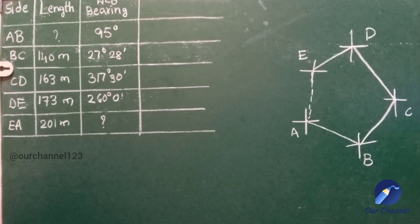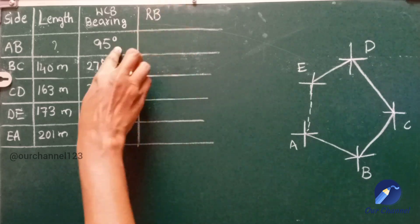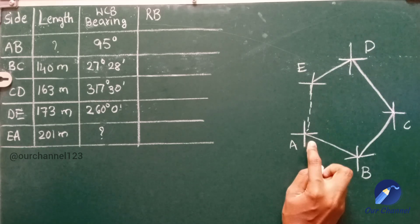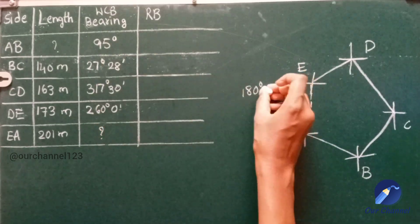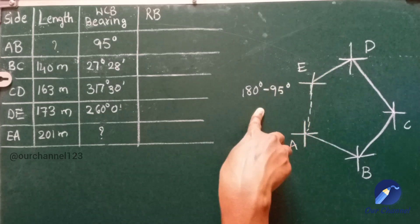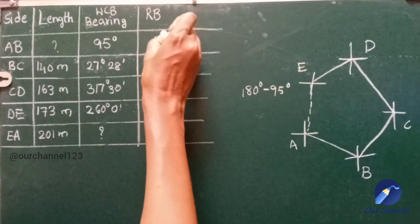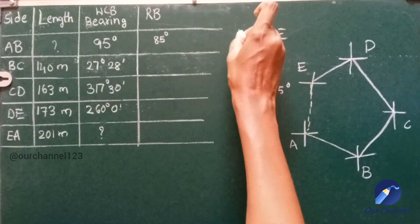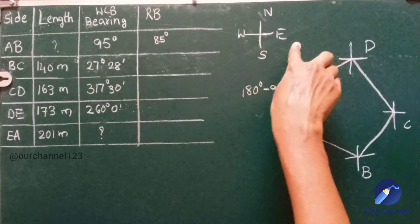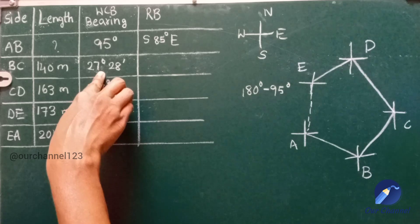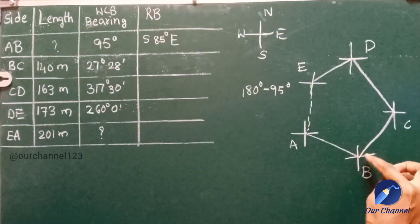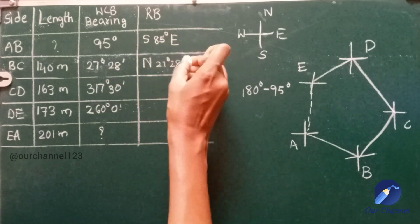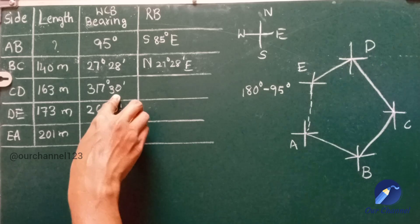The first one is 95 degrees, which comes in the second quadrant. To convert into reduced bearing, we subtract 95 degrees from 180 degrees to get 85 degrees. It is in the second quadrant, so it is South 85 degrees East. The second one, 27 degrees 28 minutes, comes in the first quadrant — North 27 degrees 28 minutes East.